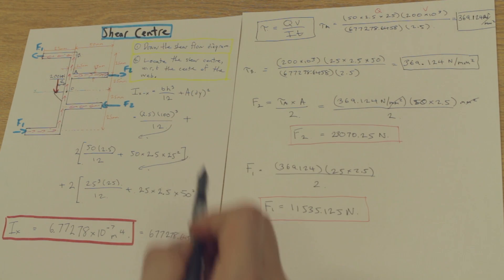We labeled the forces created by that shear flow and this external shear force of 200 kilonewtons. We found the moment of inertia, we found the stresses, and we found the forces. That was the last step we looked at.